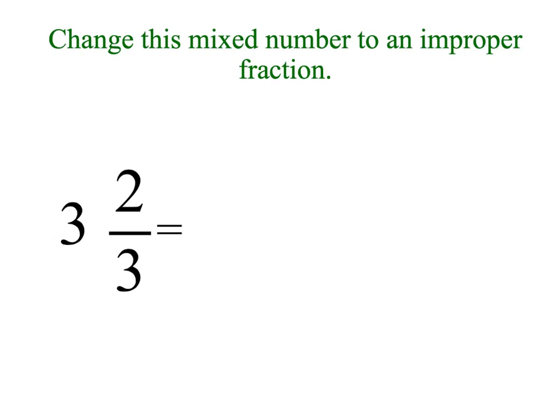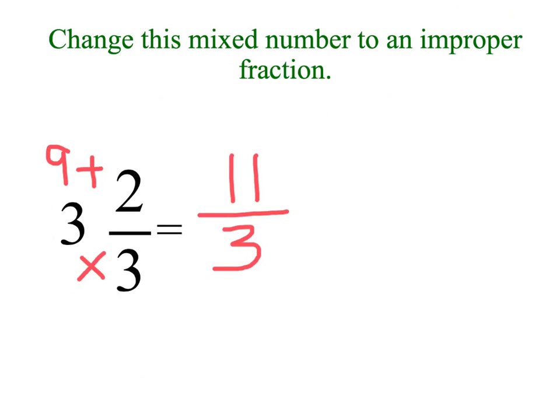Now I want you to try changing this mixed number to an improper fraction before I do the example. Pause the video and remember the steps. Step one: start with the denominator — three times three is nine. Then we add the numerator: nine plus two is eleven. We keep the denominator the same, because it is three parts — all whole numbers are split into three equal parts. So three and two thirds is eleven thirds when we change it to an improper fraction.